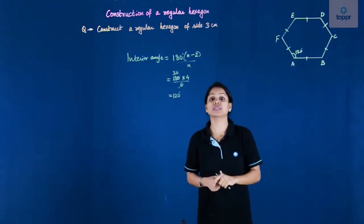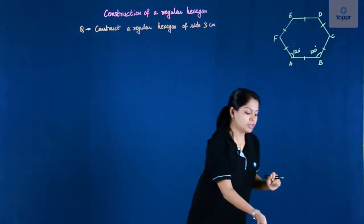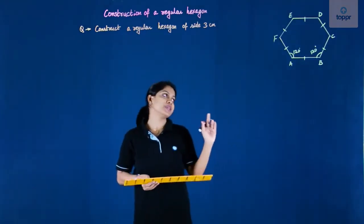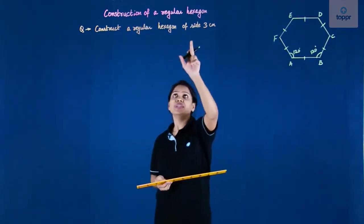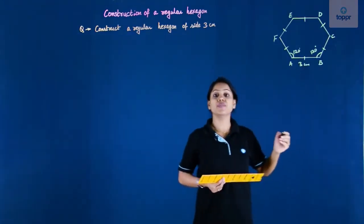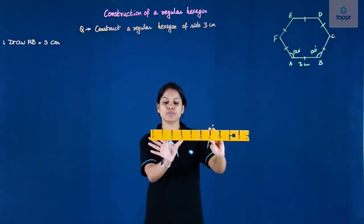Now let's proceed to construct the hexagon. We will start with the base AB. The question says we need to construct a regular hexagon of side 3, that means each of the sides are of length 3 centimeters. So here is 3 centimeters. I will start with the base.